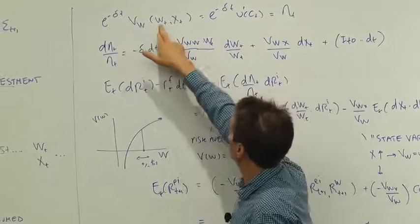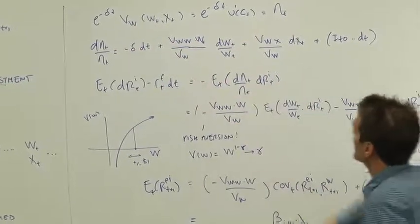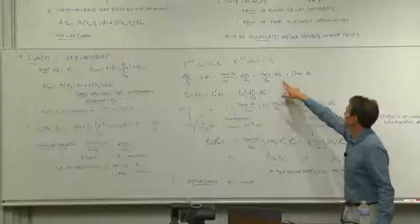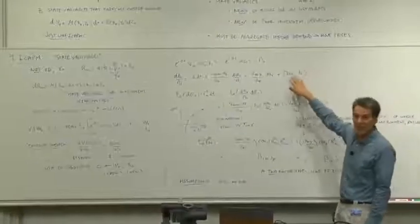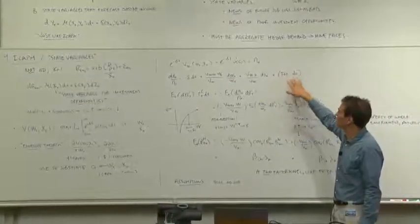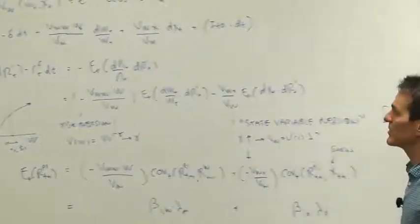You get the derivative of the value of wealth with respect to wealth times the change in wealth, the derivative with respect to the state variable X times the change in X plus some more Ito terms. You should never leave out the Ito terms, but in this case we know they're all going to end up being DT terms, and we're only interested in the DZ type terms.